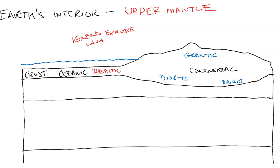The continental crust is a mix of granitic rocks, some diorite as well, and at the very bottom some basalt, which gets a higher concentration the deeper you go, but it's mostly granite. You might also hear the term granodiorite for the combination of diorite and granite.